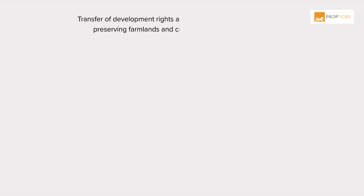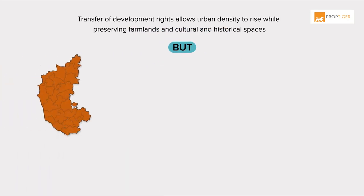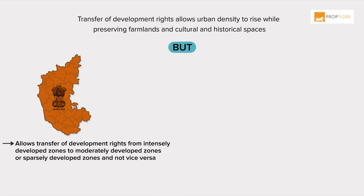When implemented well, transfer of development rights allows urban density to rise while preserving farmlands and cultural and historical spaces. But this is often not the case. The government of Karnataka, for example, allows transfer of development rights from intensely developed zones to moderately developed zones or sparsely developed zones, and not vice versa.